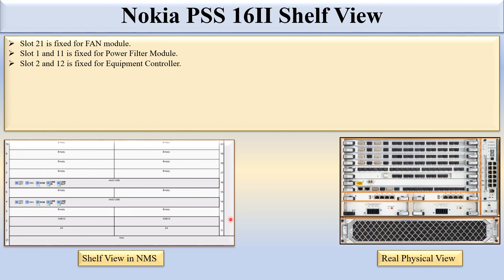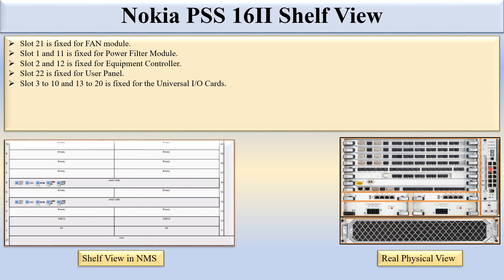Slot 2 and slot 12 are fixed for the equipment controller. You can see in the real physical view this is slot 2 and this is slot 12. Slot 22 is fixed for the user panel. You can see here this is slot 22 which is fixed for the user panel.